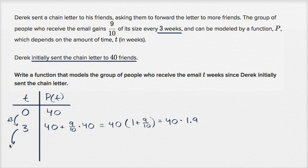And so if we go another three weeks, six weeks, how many people will have received the email? Well, it's going to be this number, and it's going to have grown another 90%. So we're going to multiply it times 1.9 again. So it's going to be 40 times 1.9 times 1.9.